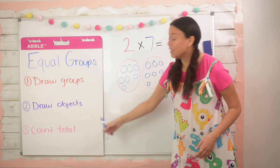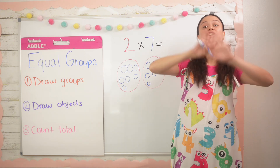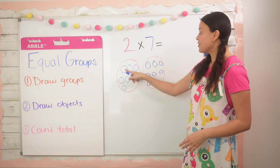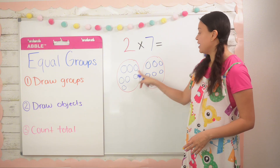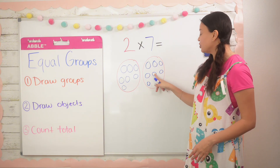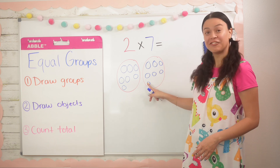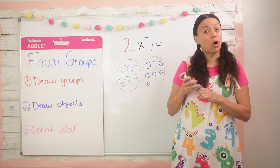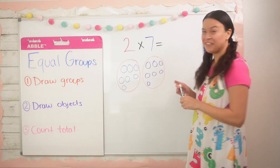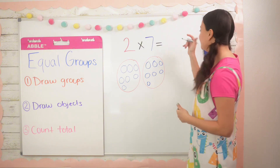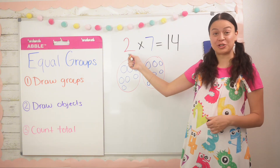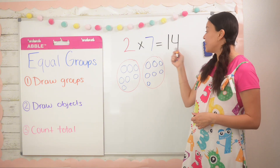Step number three says to count the total of objects. So I know I have seven here, so seven, eight, nine, ten, eleven, twelve, thirteen, fourteen. So our total or our product is fourteen. Two times seven is fourteen.